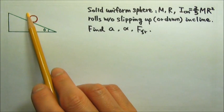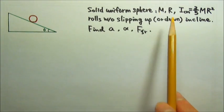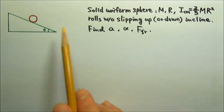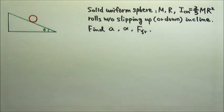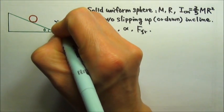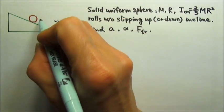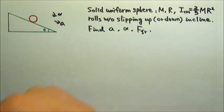If the sphere is rolling up the incline, it's going to slow down. If it's rolling down the incline, it will speed up. So the acceleration either way is down the incline, and the angular acceleration is clockwise.